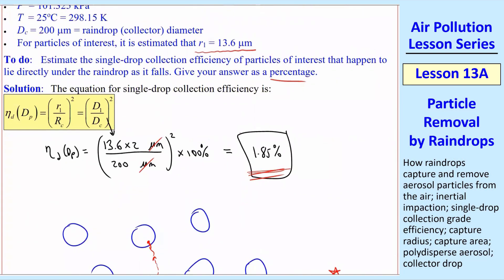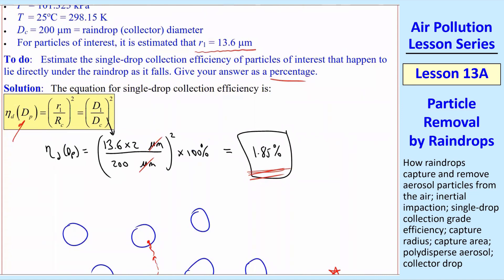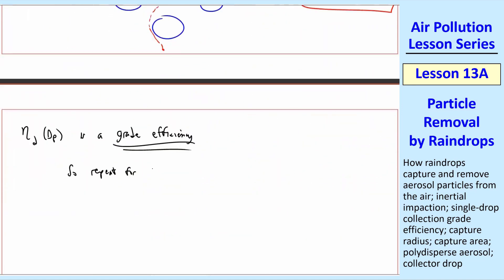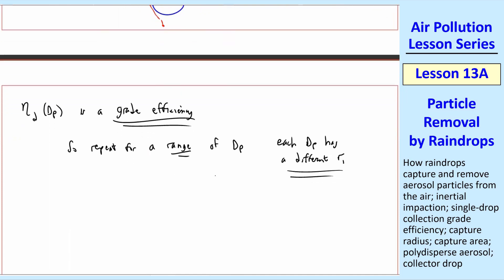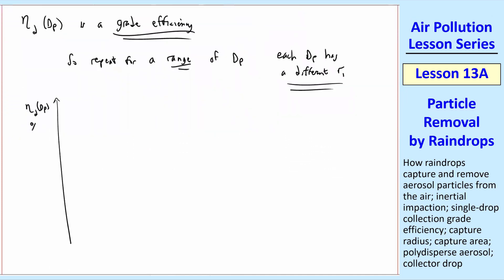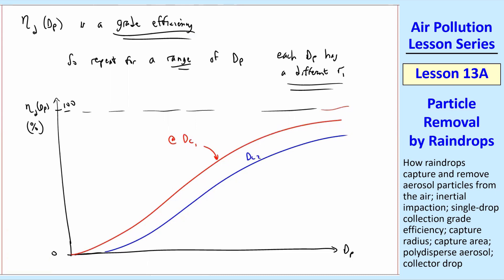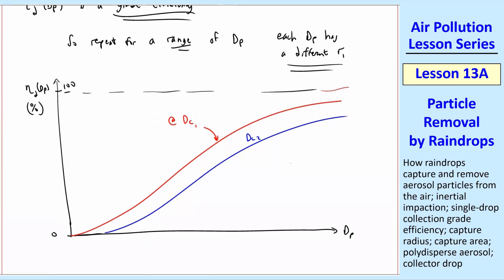Finally, we have to realize that this ηdp, it's a function of dp, so it's a grade efficiency. So as we always do, we repeat for a range of dp. Each dp will have a different value of this R1 capture radius. So we can make our usual grade efficiency plot in percentage 0 to 100% as a function of dp. And we expect it to have a typical S-curve, although it may not always go to 100%, and we'll see why later. So next time we'll develop some equations where we can calculate these grade efficiencies for actual raindrops and actual particles.